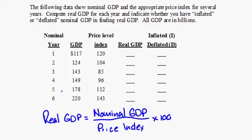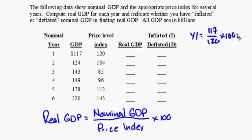Real GDP equals nominal GDP divided by the price index, multiplied by 100. The table gives us six years of data with nominal GDP and the price index. For year one, nominal GDP is 117 divided by a price index of 120, multiplied by 100, which equals 98. So real GDP in year one is $98.